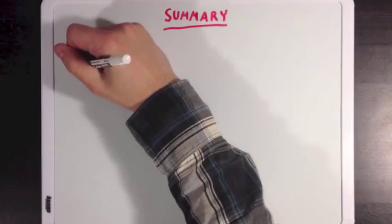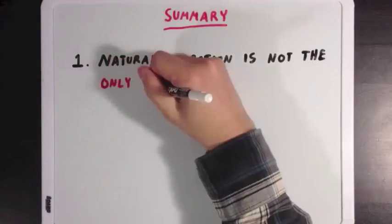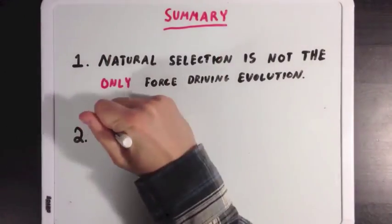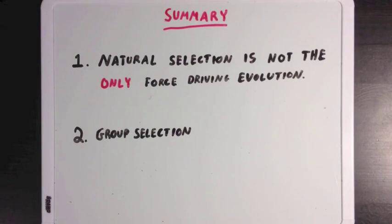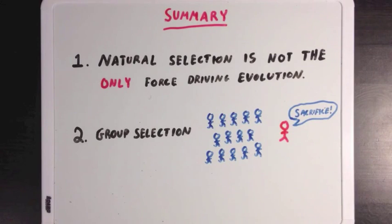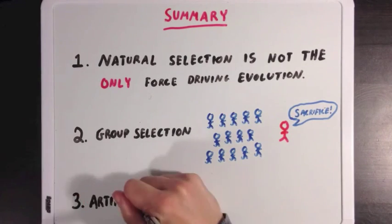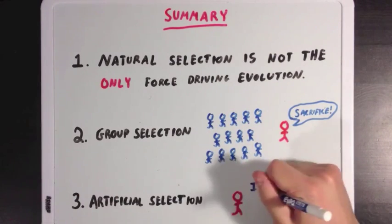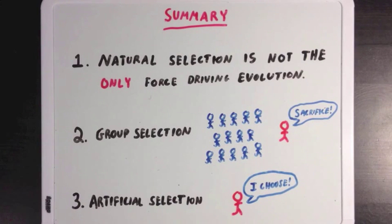So what did we learn? Well first we learned that natural selection is not the only force driving evolution. We have group selection, which is the idea that traits benefiting the group over the individual with the trait can still be selected for. And we also talked about artificial selection, which is where an outside individual can literally choose which traits in a given population will be passed on, instead of that selection occurring naturally.